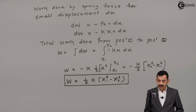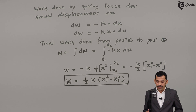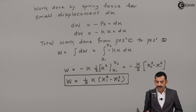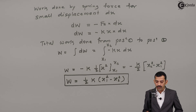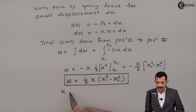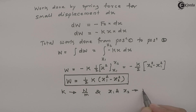In the work done by spring force formula, k, x1, and x2 are important. Whenever you solve any problem, units are very important. Always substitute k in Newtons per meter, and x1 and x2 — these deformations — always substitute in meters. Sometimes k may be given in Newtons per centimeter, so convert it to Newtons per meter before substituting.